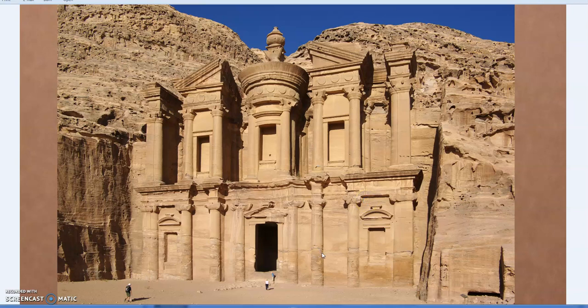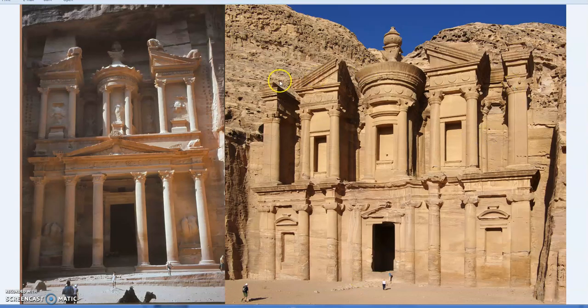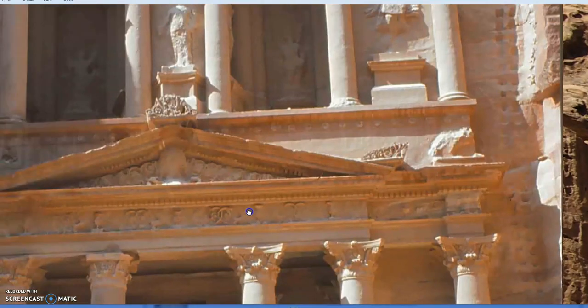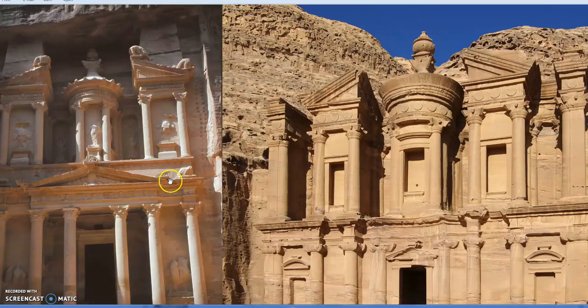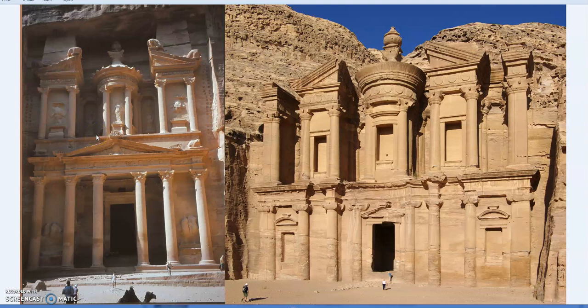Hello, Sacred Geometry Decoded. A while back I did a video on the famous Treasury building in Petra, going through all the design features. It is Greco-Roman — without a doubt, beyond question. In the comments someone asked me about a picture of another building also in Petra, Jordan, asking what type of columns these were. Just so there's no confusion: on the left we see the famous Treasury building featured in Indiana Jones movies — that's the one I covered.